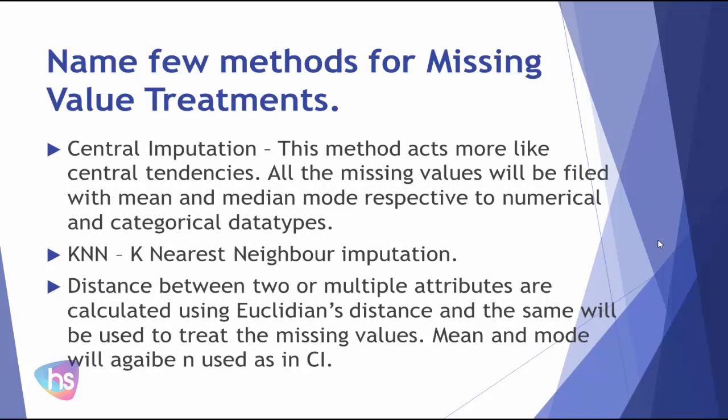Coming to the next question: name a few methods for missing value treatments. Central imputation — this method acts more like central tendency. All the missing values will be filled with the mean, median, or mode respective to numerical and categorical data types. The next method is KNN — K Nearest Neighbor imputation.